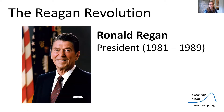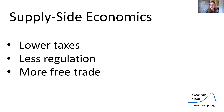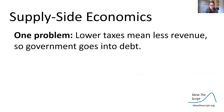The Reagan revolution was a huge moment in the history of American tax policy. Ronald Reagan was president from 1981 to 1989 and was famous for his supply-side economic policies. Supply-side economics includes lowering taxes, decreasing regulation, and promoting more free trade in order to create jobs, lower prices on goods, and grow and stimulate the economy. The problem with supply-side economics is that lower taxes mean less revenue, so the government goes into debt.